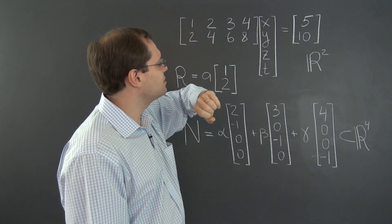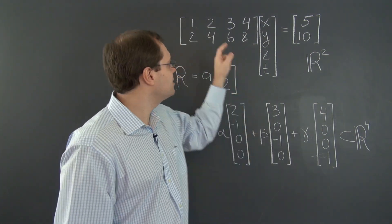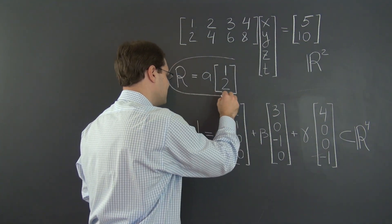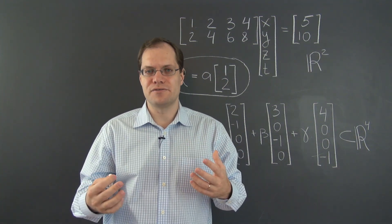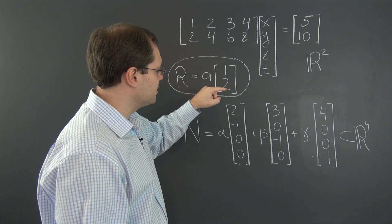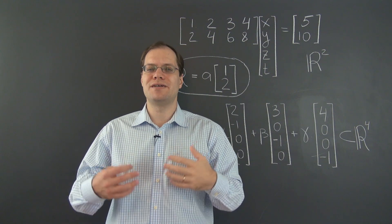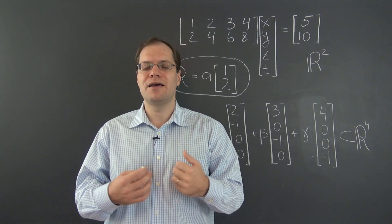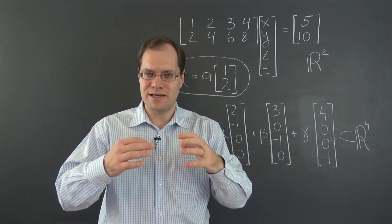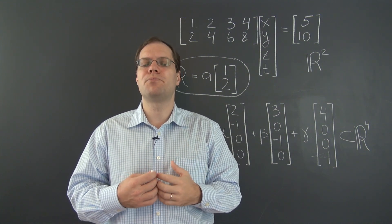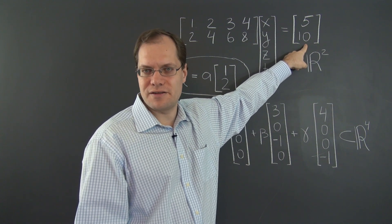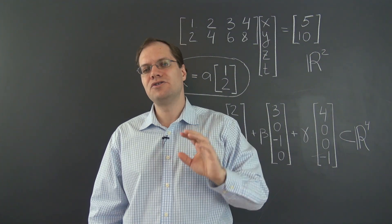It has to be in that family in order to be represented by the columns. And in this case, it is — because the column space consists of vectors where the second entry is twice the first. Twice the first, twice the first, twice the first — so that's all we can possibly get. That's the column space. The column space is not an expression; it's a set of vectors. This expression describes the full set of vectors where the second entry is twice the first. So the question of existence — whether there is even a single solution — is a question of the column space: is the right-hand side in the column space?